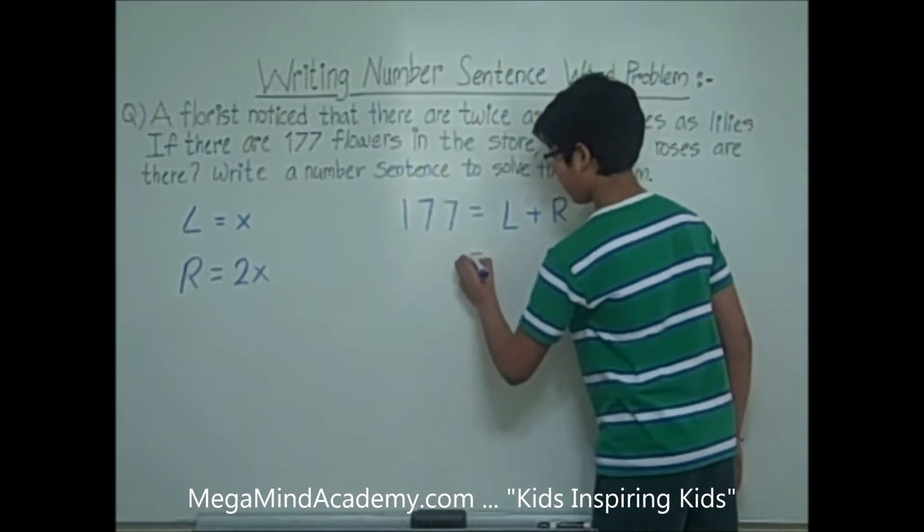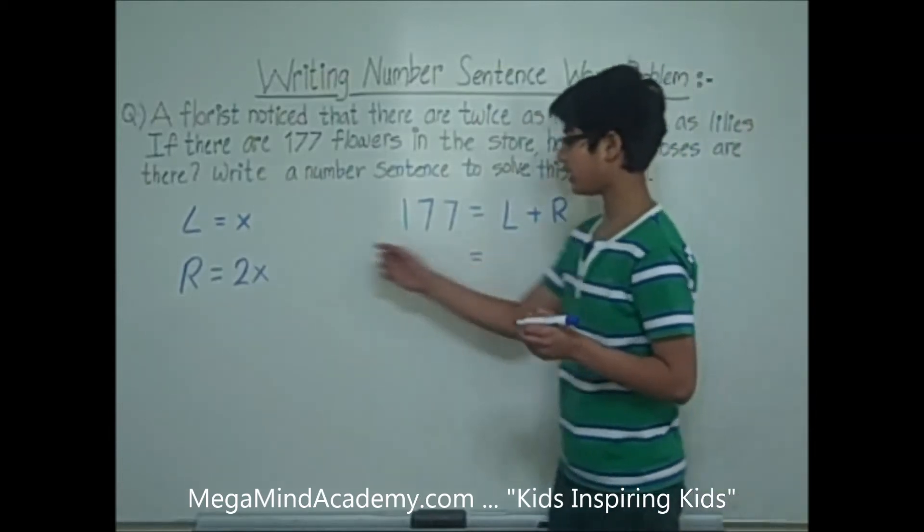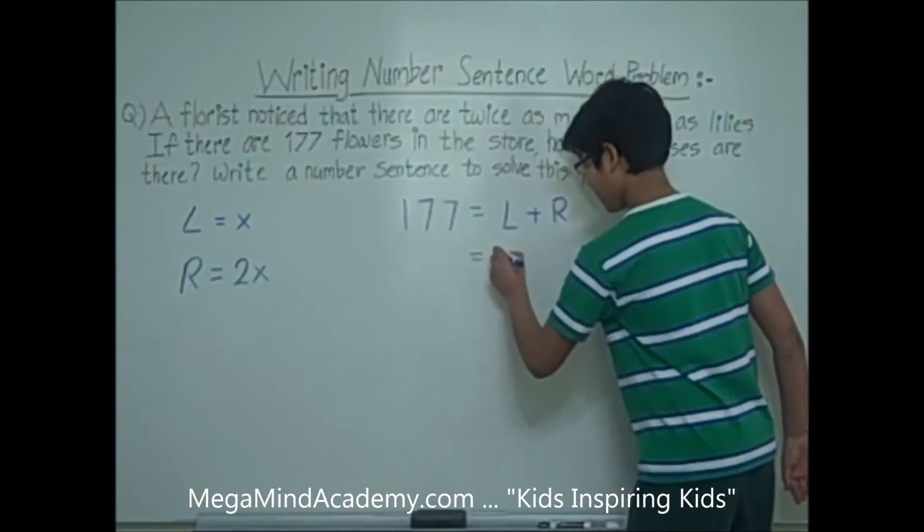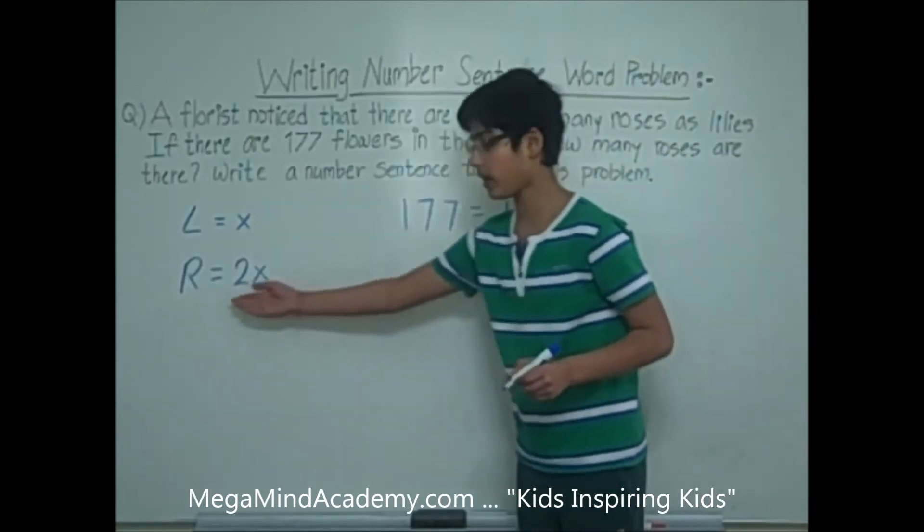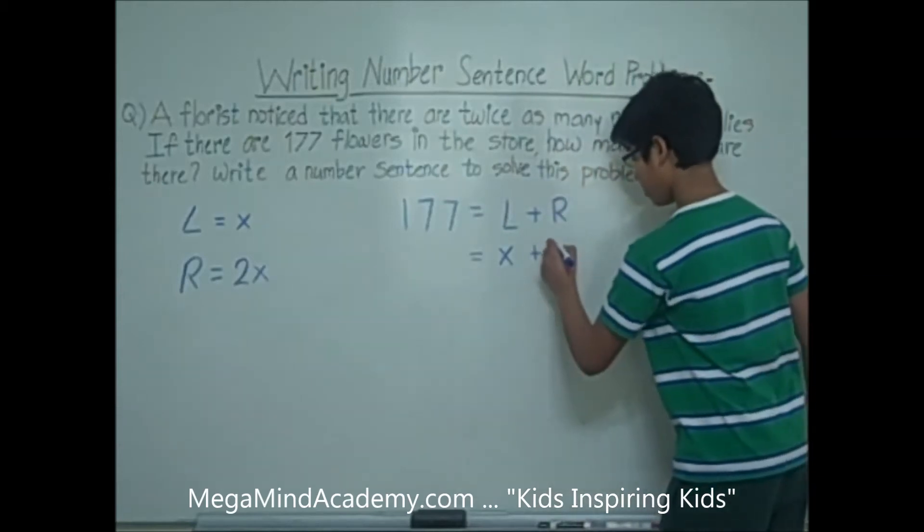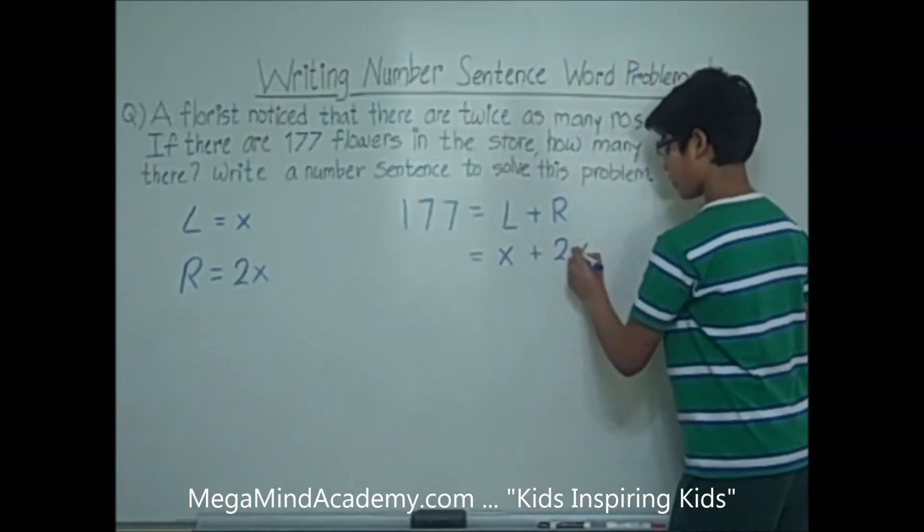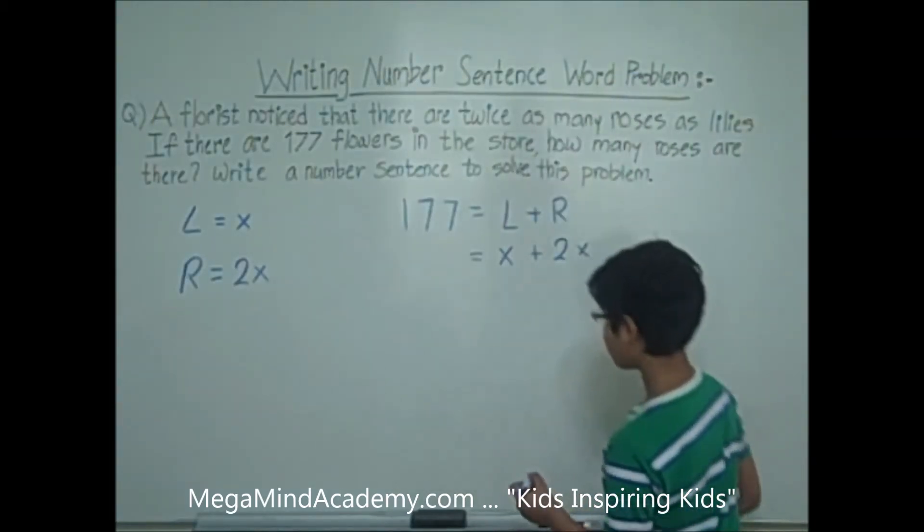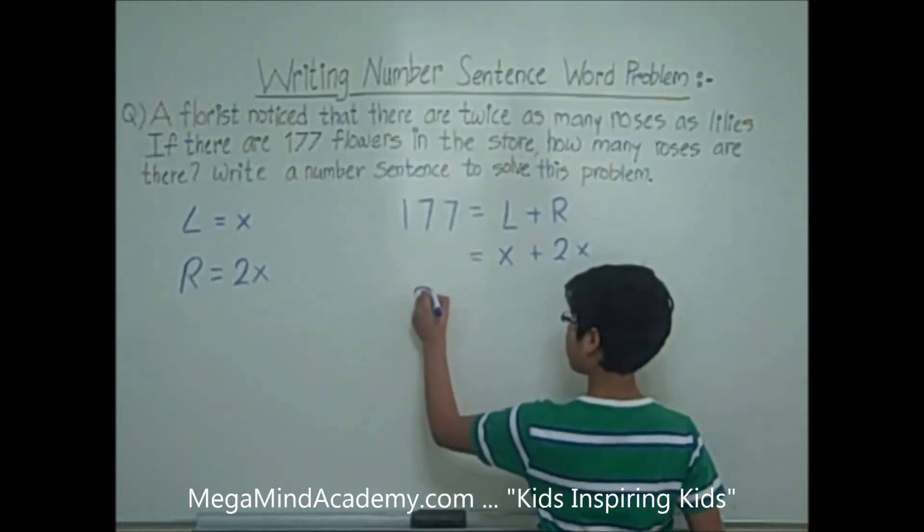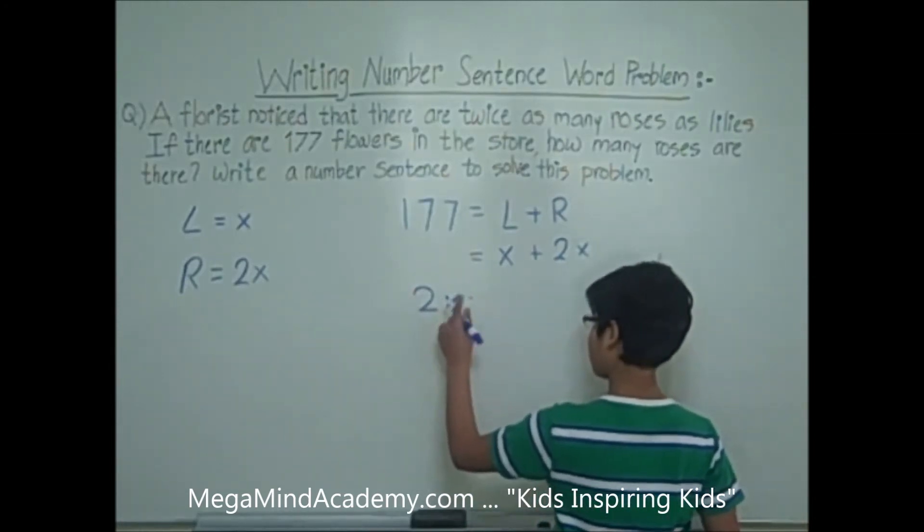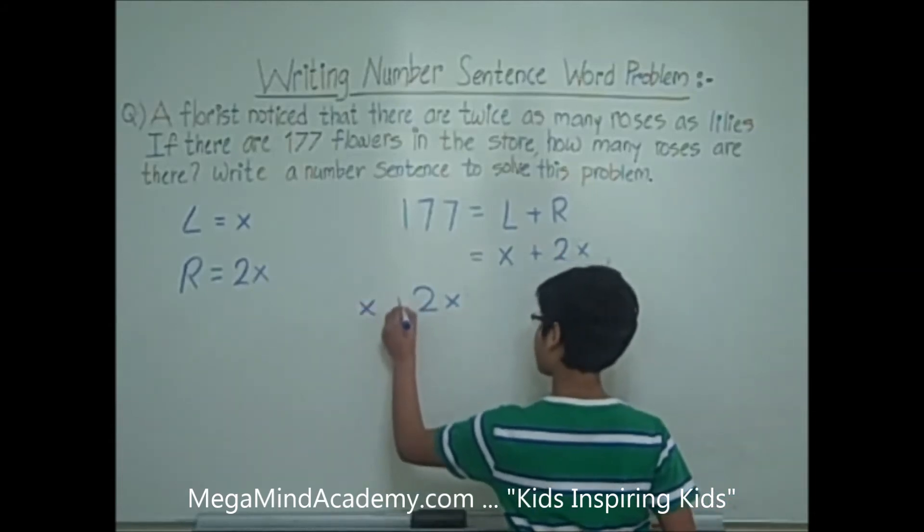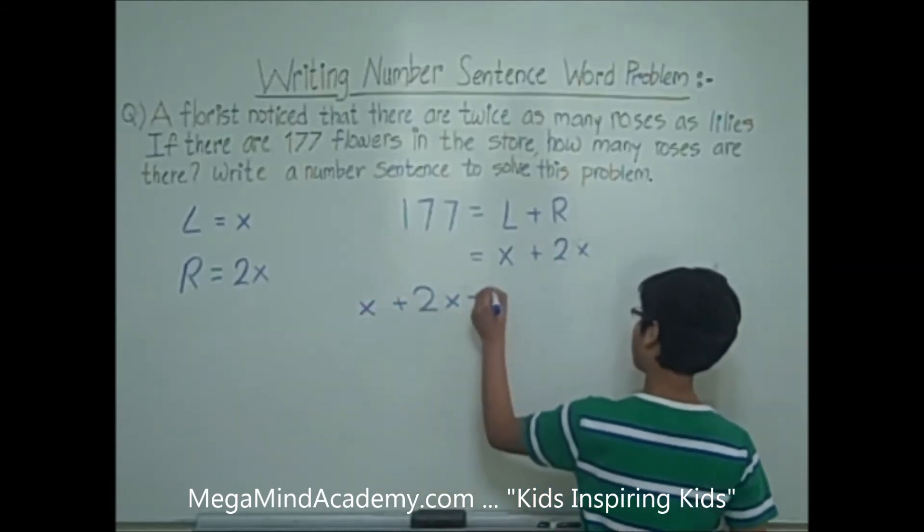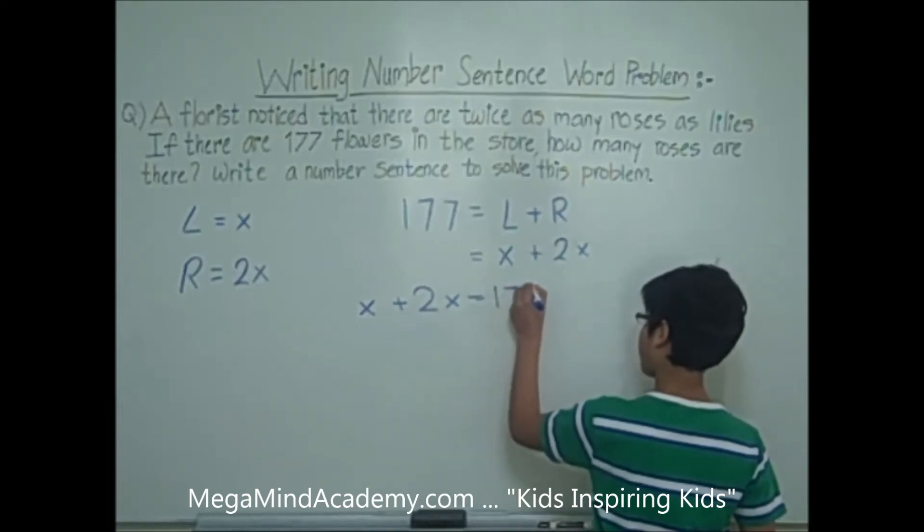which equals L for lilies equals x, so x, plus R for roses equals 2x, so plus 2x. So that means x plus 2x equals 177.